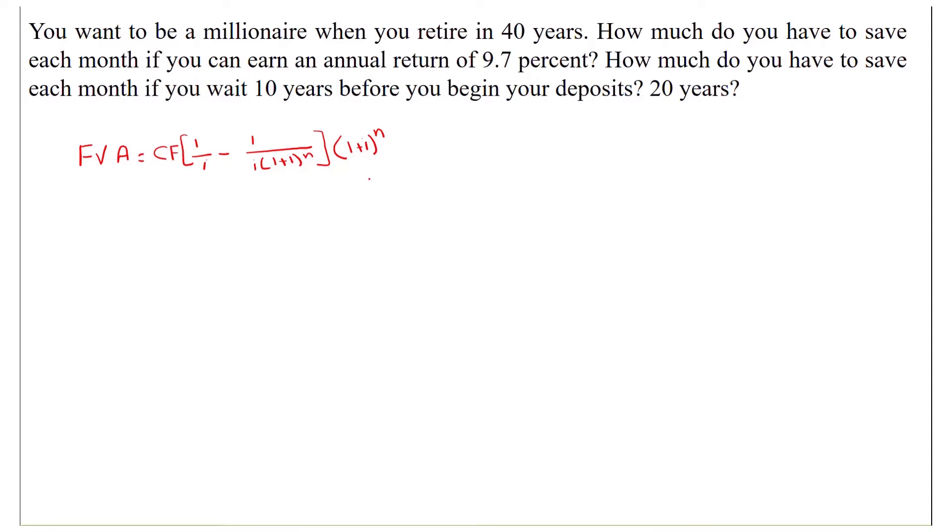In this question, the future value of annuity will be 1 million, whereas the interest rate is 9.7%. As monthly compounding is used, we will divide 9.7% by 12, and the answer will be 0.0081.